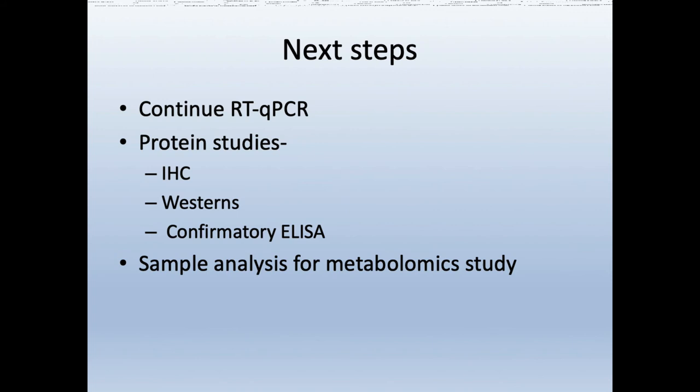The next steps are to continue some of the RT-PCR work but moving into protein studies. We've already begun immunohistochemistry to look at expression of these proteins at the tissue level. We're going to be doing Westerns and ELISAs as confirmatory assays, and then moving into sample analysis for a metabolomics study.